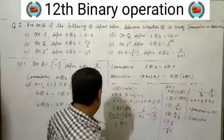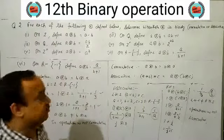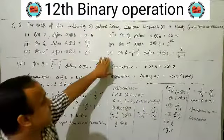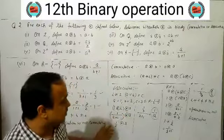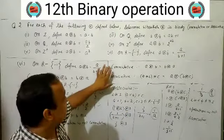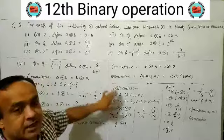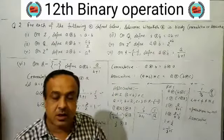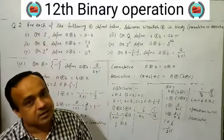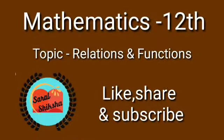Left hand side is not equal to right hand side. So the operation is not associative. The operation a★b = a/(b+1) is neither associative nor commutative. Hope you have understood all 6 parts of Question 2 - checking commutative and associative properties. Please subscribe to the channel. Thank you.